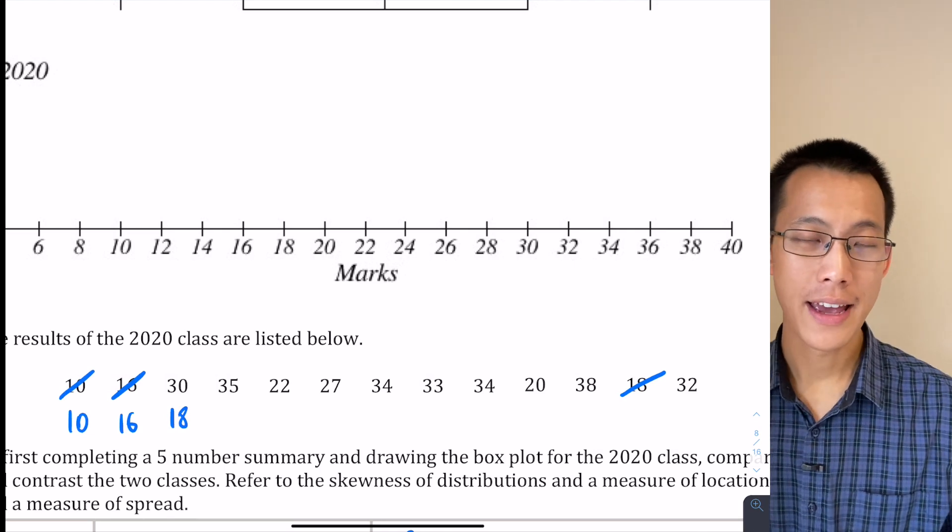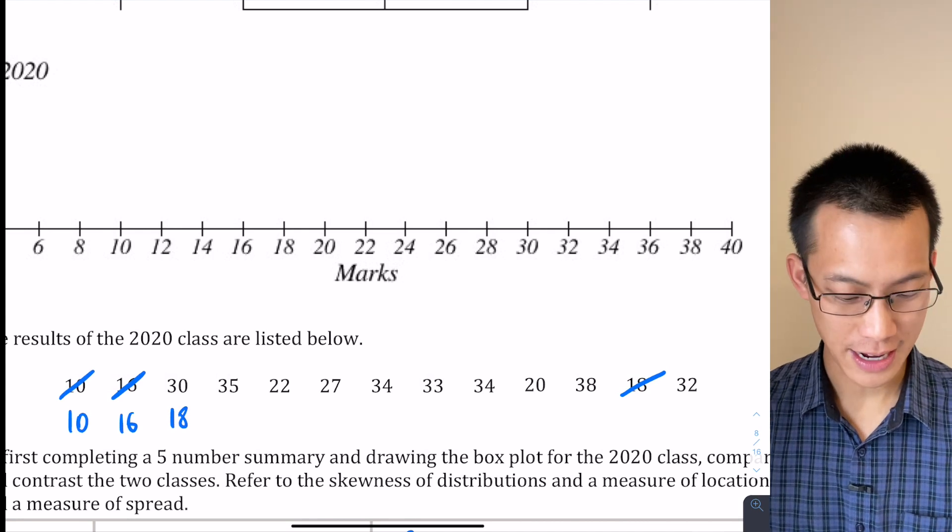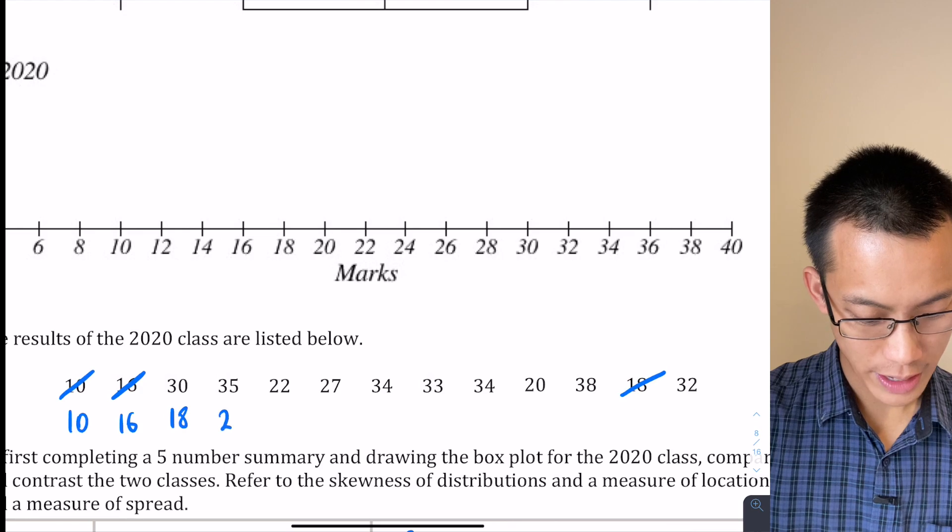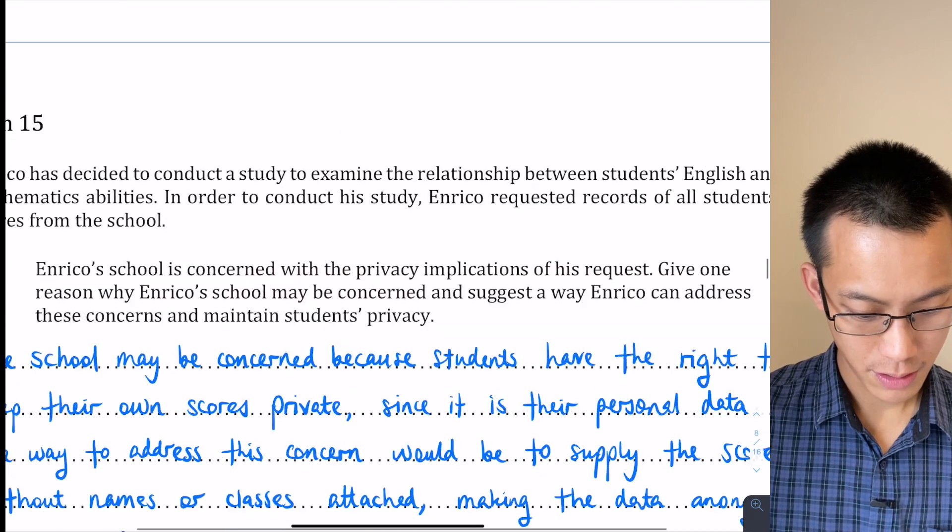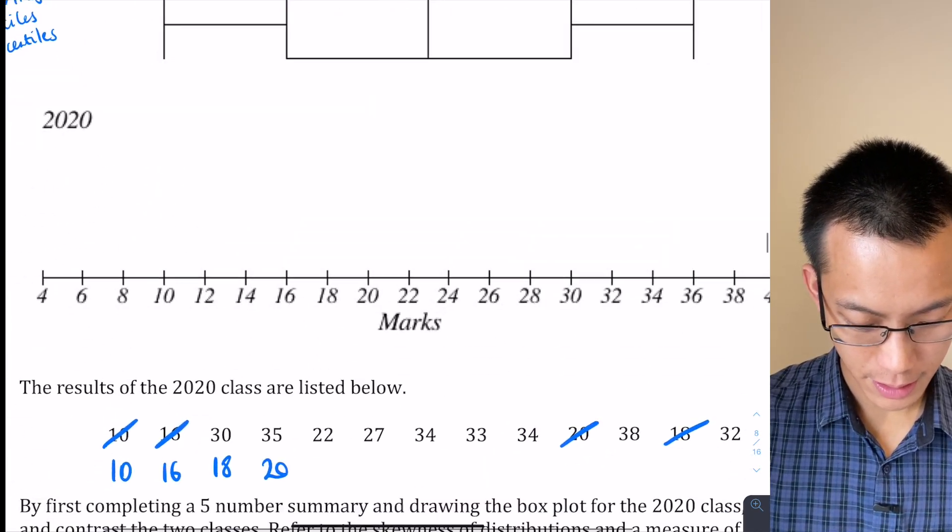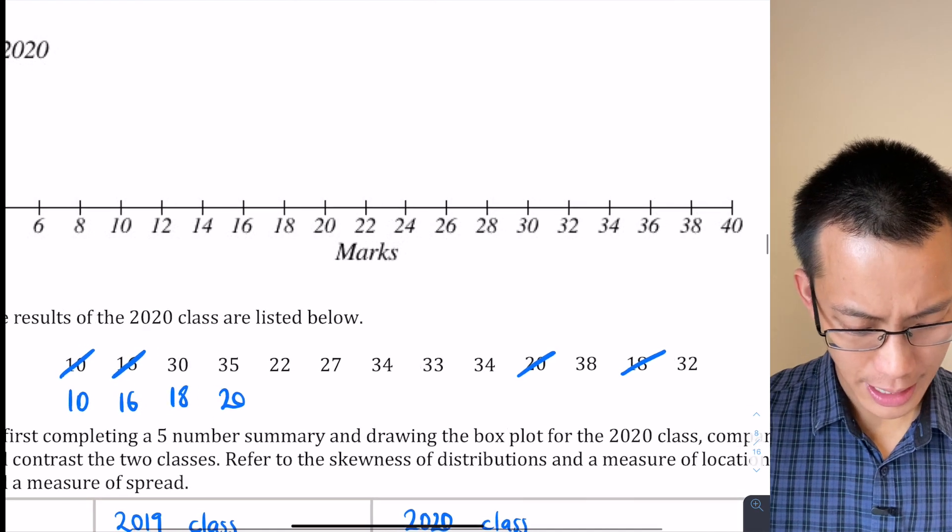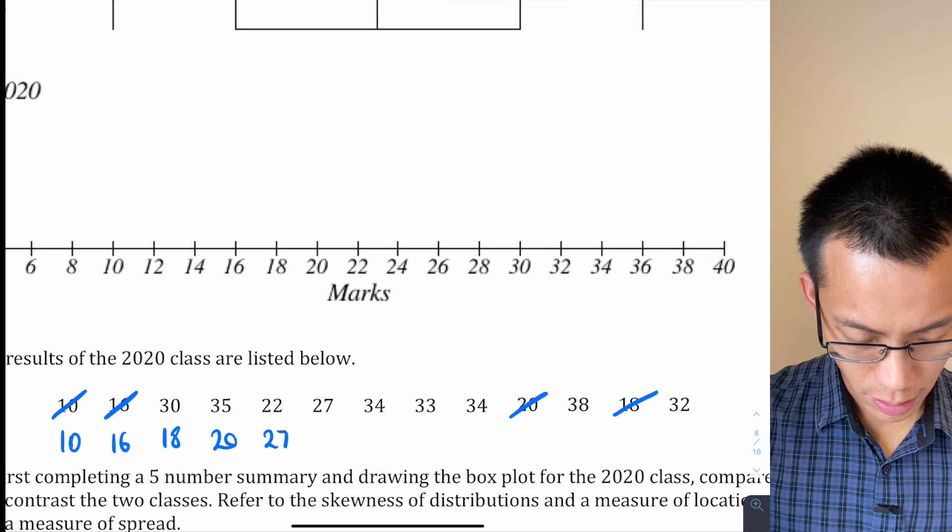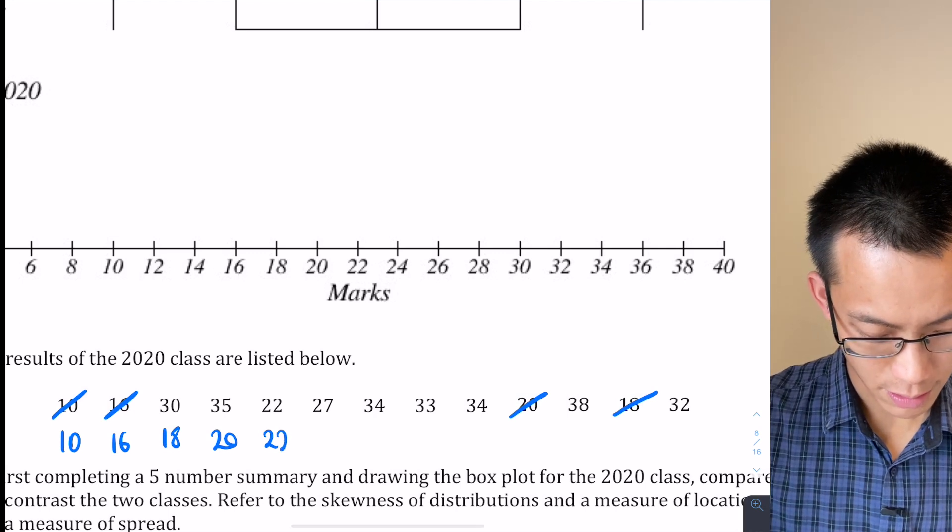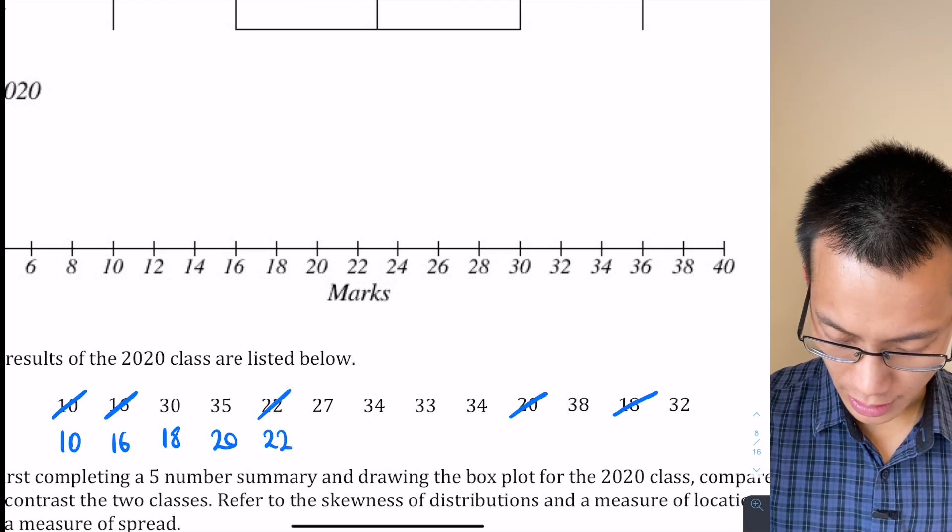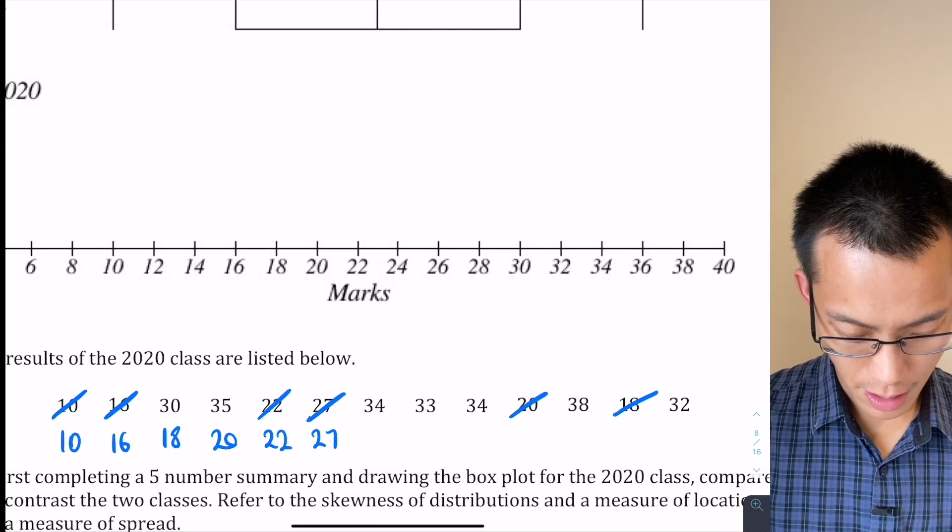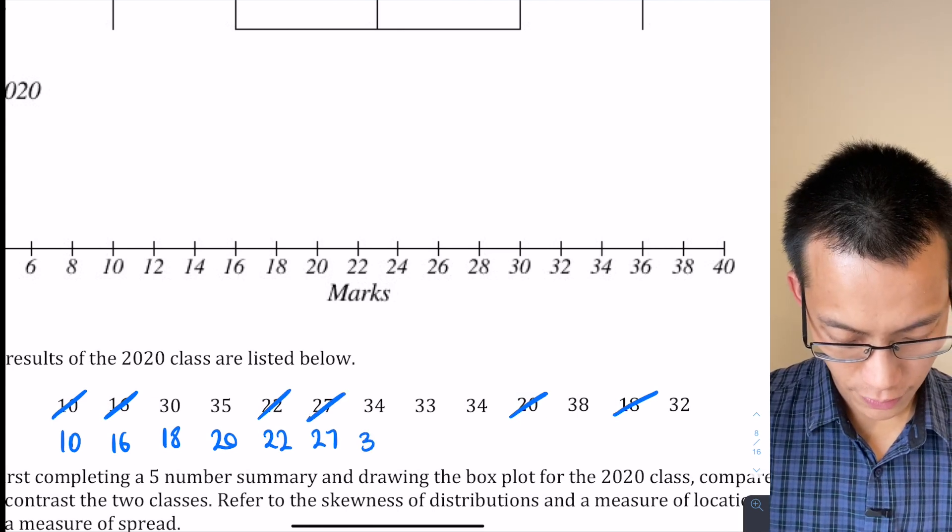What I'll end up with is an ordered list of all the data points. So let's see, the next one I can see is 20, cross that out. What do we have next here? 27—oh no, sorry, missed the 22 there, then the 27, cross that one out.